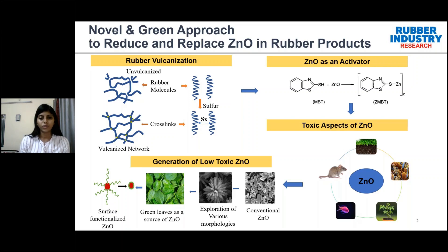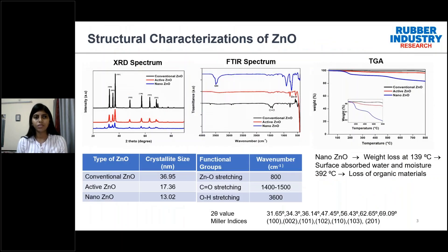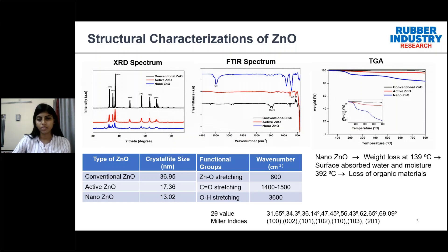Due to these ecological concerns, minimization of zinc oxide in rubber compounds is a necessity. We explored replacing conventional zinc oxide with various zinc oxide structures like active zinc oxide and nano zinc oxide. For structural characterization we performed XRD, FTIR, and TGA analysis. From XRD, the two-theta values corresponded to typical Miller indices confirming the hexagonal wurtzite structure. The FTIR spectrum shows a prominent zinc oxide peak and OH peaks observed at 800 and 3600 wavenumbers in nano zinc oxide. The TGA thermogram shows two degradation profiles for nano zinc oxide: weight loss at 139°C due to volatile materials or adsorbed water, and another around 392°C due to loss of organic materials from the synthesis process.